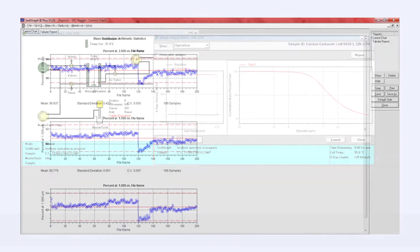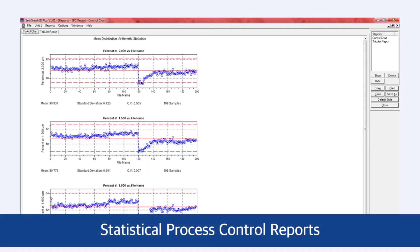The Setagraph 3 Plus also features statistical process control reports to track the performance of your processes allowing for immediate response to fluctuations.